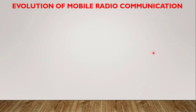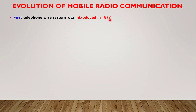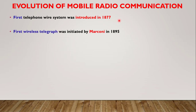Now we will see the evolution of wireless systems, or the evolution of mobile radio communication. The first telephone wire system was introduced in 1877 — it was a wired system. After that, the scientist Marconi initiated the first wireless telegraph in 1895. The information transmitted at that time was textual or symbolic messages. These events till 1920 are known as the pioneer era.